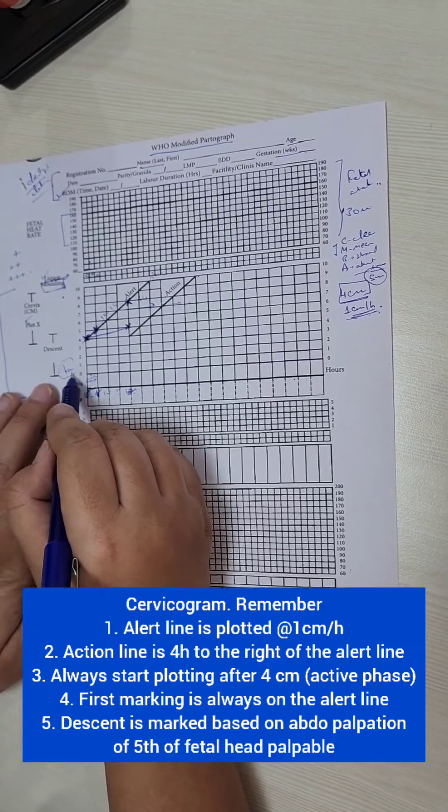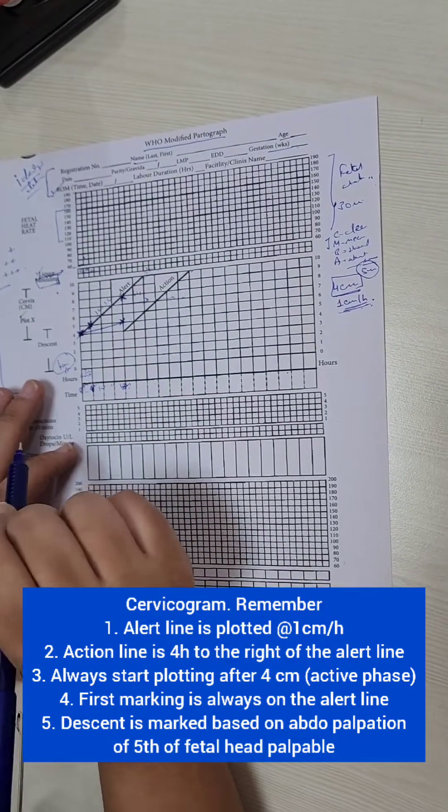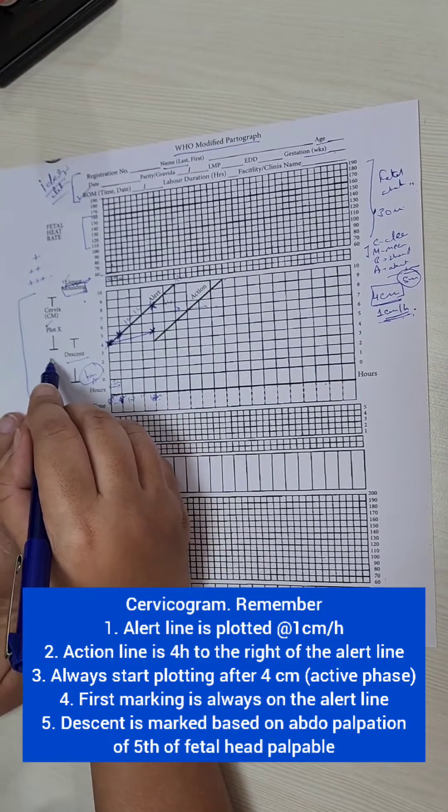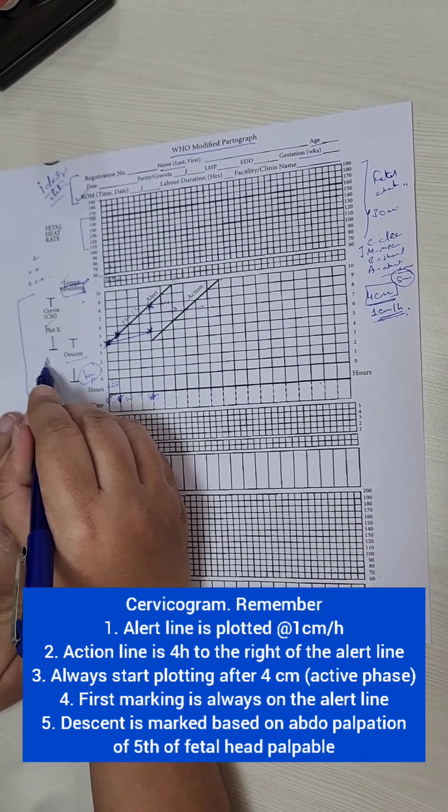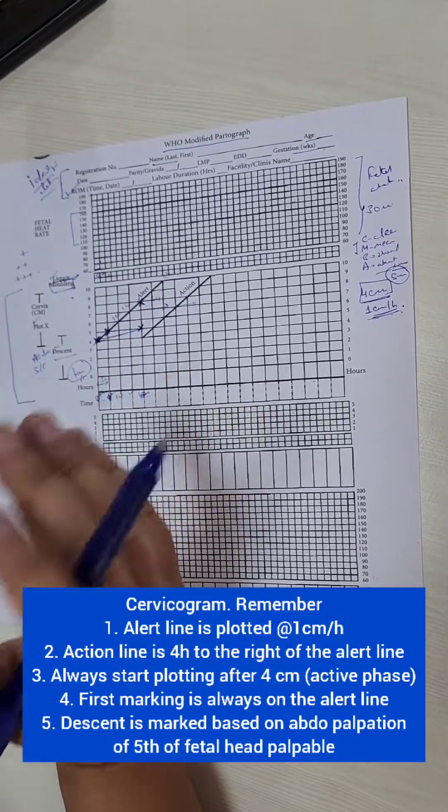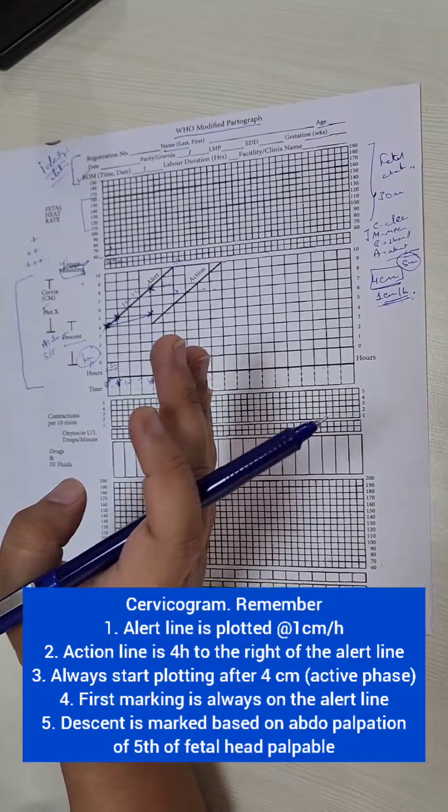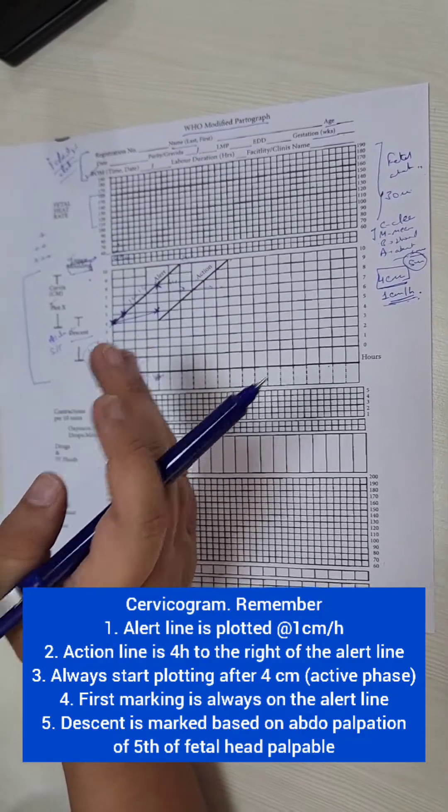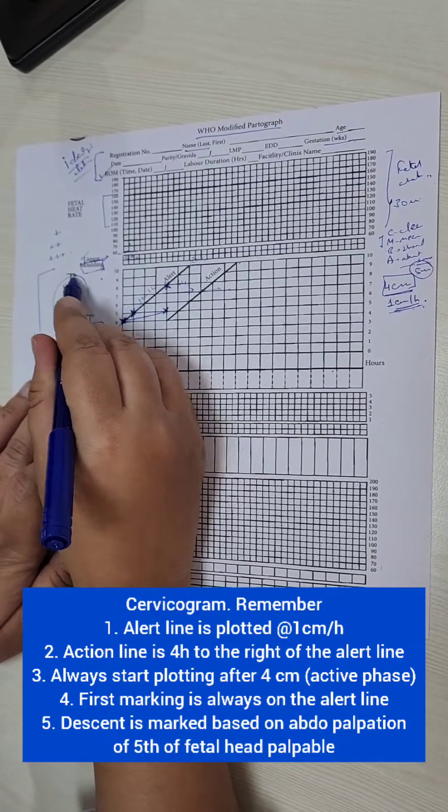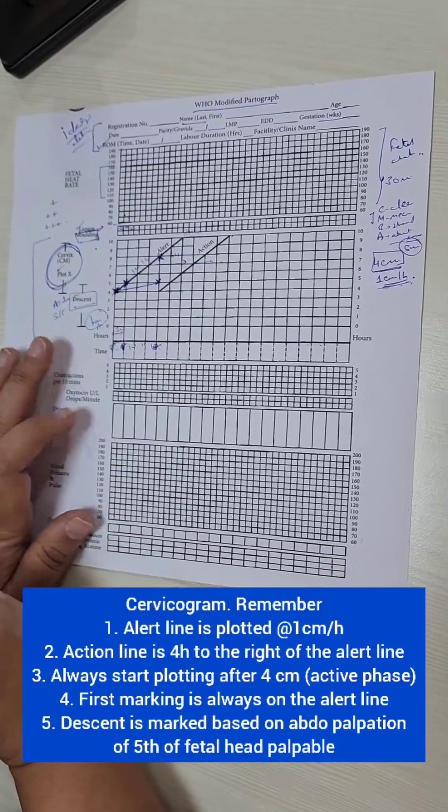On the same graph we also plot descent of the head and remember descent is based on abdominal palpation in fifths of the fetal head palpable. That is 5 fifth palpable, 4 fifth palpable, 3 fifth, 2 fifth or 1 fifth palpable. So that is descent of the fetal head. But the most important part of the partograph is the cervicogram.